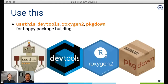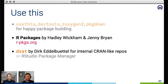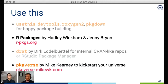None of this would be possible without a slew of packages and resources. Key among these are usethis and devtools, which are great for package building; roxygen2 and pkgdown for package documentation. If you're new to package building, Hadley Wickham and Jenny Bryan's R Packages book is a great place to start and an invaluable resource when you get stuck. We also used drat by Dirk Edelbeutel to create an internal CRAN-like package repository, which made package installation much nicer and easier for users. Another option is RStudio Package Manager. And a big shout out to Mike Kearney's packageverse template, which made it easy to pull all of our packages into a cohesive unit.